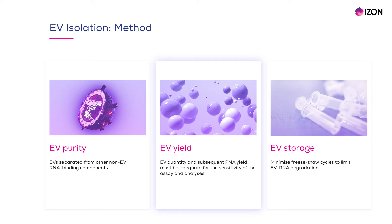EV purity and yield are closely related parameters. Without an appropriate method to remove non-EV components with RNA-binding capacity, the yield of EV RNA is artificially overestimated, with a clear compromise on EV purity.